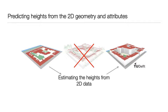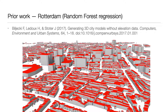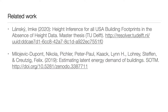Going back to the figure shown earlier, we are looking into whether we can skip the step of having height information for all buildings, simply by predicting them from 2D data such as building geometry and attributes. This is not a new idea — I personally worked on preceding work 3 years ago where we built a random forest regression model to predict the heights of buildings from their footprints. The work was focused on Rotterdam in the Netherlands, and this project looks at whether we can scale it globally. The image on this slide shows the 3D model of Rotterdam generated without height data.